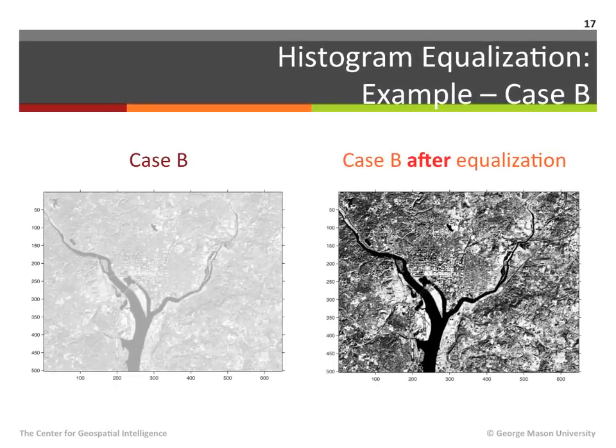To further illustrate the benefits of histogram equalization, let us explore how this process affects the image used in case B. The image on the left is the image used in case B before histogram equalization. The image on the right is the same image after applying histogram equalization. Once again, the improvement both in terms of contrast and in terms of the overall image brightness is evident.